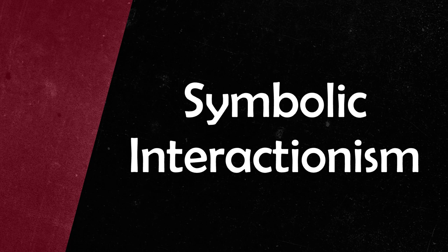Number three on our list is symbolic interactionism, which was extremely influential in the development of sociology in the second half of the 20th century and is still important today. Symbolic interactionism is not a single unified theory — it's more of a micro-oriented approach to sociology that provides a framework on which other contemporary sociological theories are built.